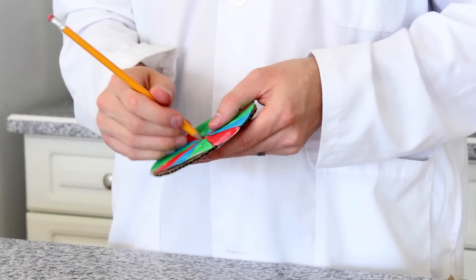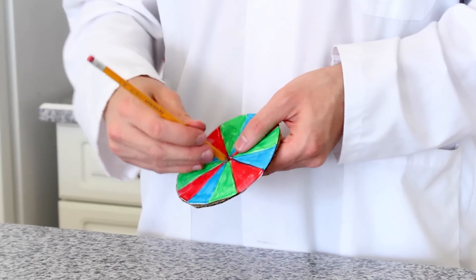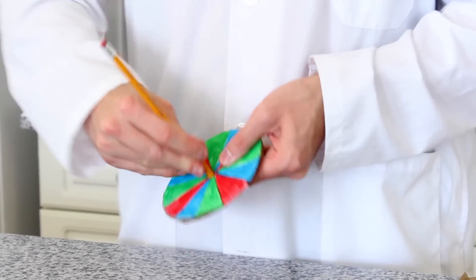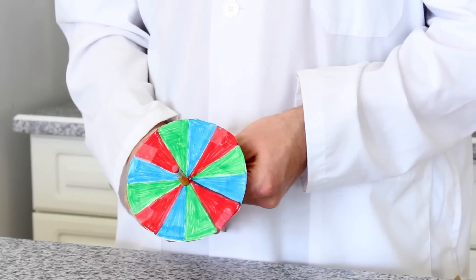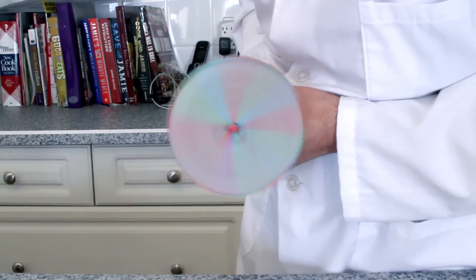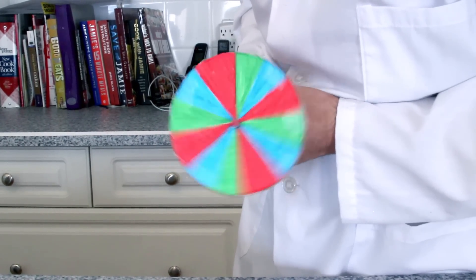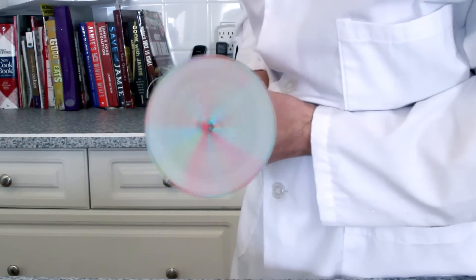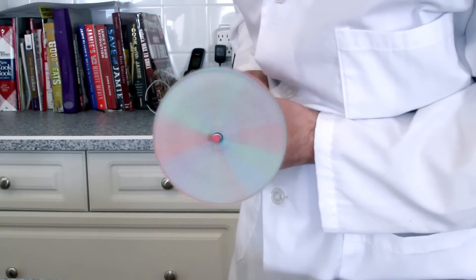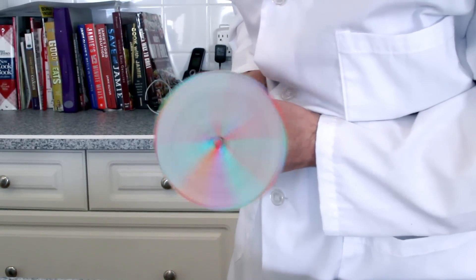The final step in preparing our experiment is to push the pencil through the middle of our Newton's disc. You may need to tape the pencil to the disc to ensure it doesn't slip while spinning. With our disc prepared, hold onto the pencil and spin it so that our disc rotates around in circles. If you spin your disc fast enough, you will notice that the colors will begin to blend together into gray or white light.